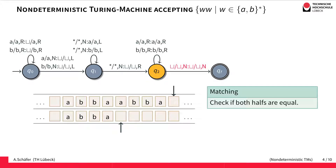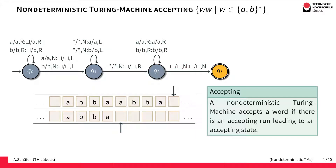The two halves will only coincide if we actually found the middle by guessing; otherwise the matching would not work. However, if the matching does work, then both the first and the second tape will encounter the blank at the same time and we can move to our accepting state QF.